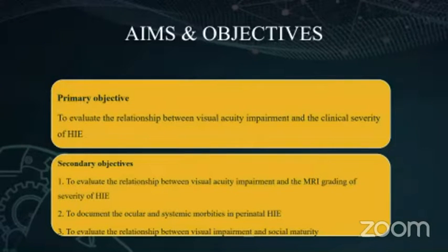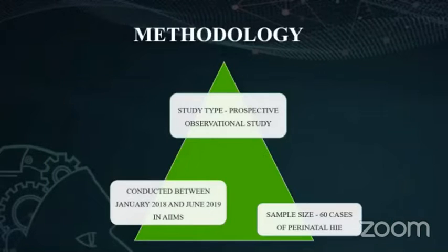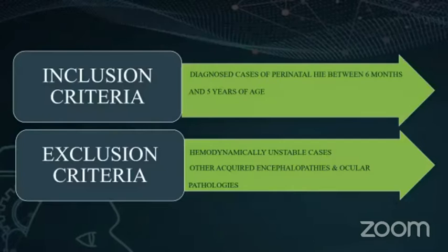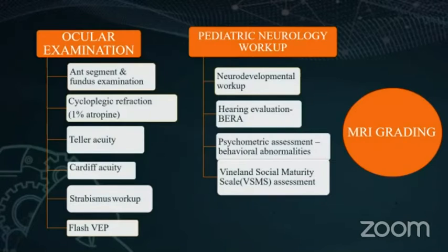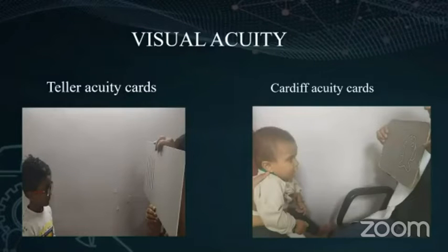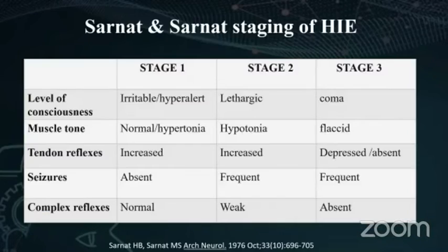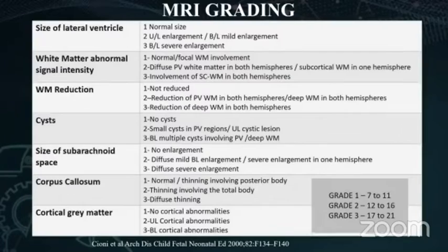A prospective observational study was conducted with a sample size of 60 diagnosed cases, with 20 in each of the three clinical stages of severity, including children between six months and five years of age, excluding other acquired encephalopathies. A detailed ocular examination, pediatric neurological workup, and social developmental quotient assessed by VSMS by neuropsychologists were performed, and all children who had neonatal MRI were subjected to MRI grading. Binocular visual acuity with Teller acuity cards after cycloplegic refraction was tested, flash VEP was recorded, clinical severity was classified per Sarnat clinical staging of HIE into three stages, and MRI lesions were topographically classified, scored, and graded.